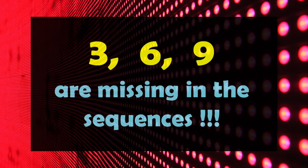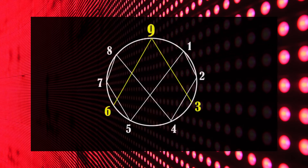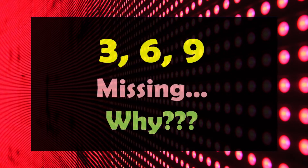Did you notice one amazing thing here? In both the sequences, numbers 3, 6 and 9 are missing every time. In the diagram, these repeating numbers 1, 2, 4, 8, 7 and 5 are shown in white color, and the numbers that are missing in the sequence every time — that is 3, 6 and 9 — are shown in yellow color. But what does the absence of numbers 3, 6 and 9 in the sequence mean?